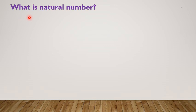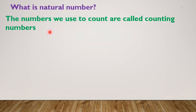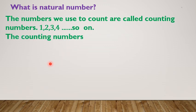The numbers we use to count are called counting numbers: 1, 2, 3, 4, and so on. The counting numbers are also known as natural numbers.